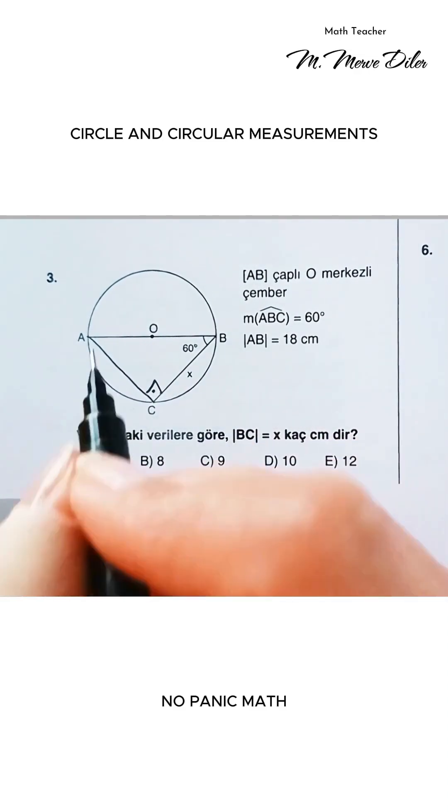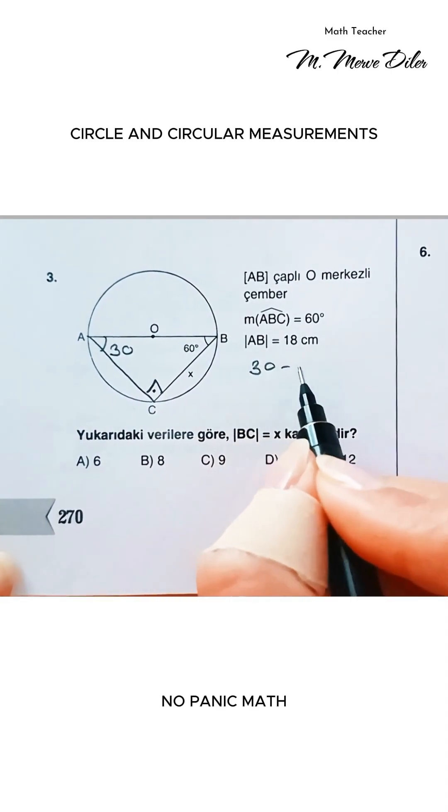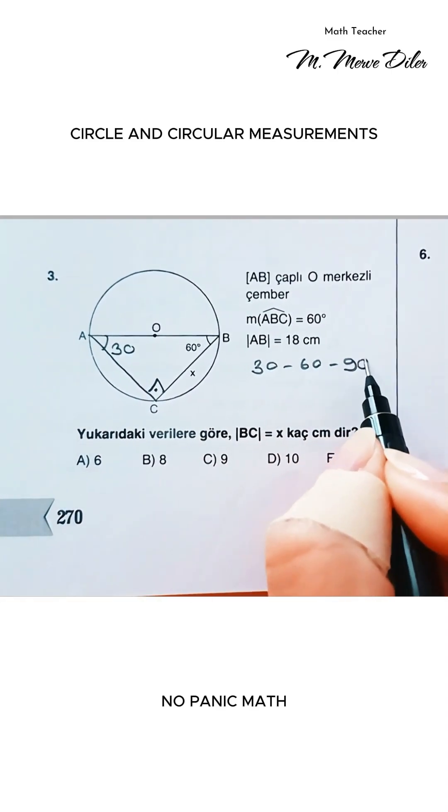Now look, 60 is here, 90 is here, so the angle here will be 30. What special triangle do we have? We have a 30-60-90 special triangle.